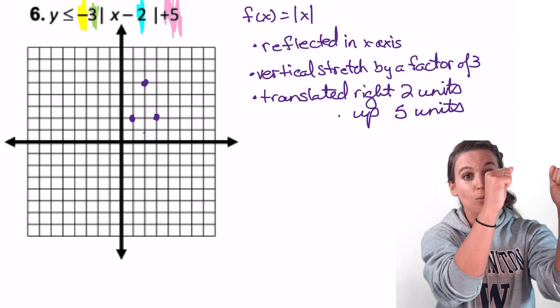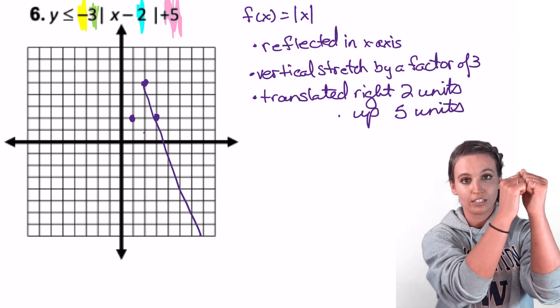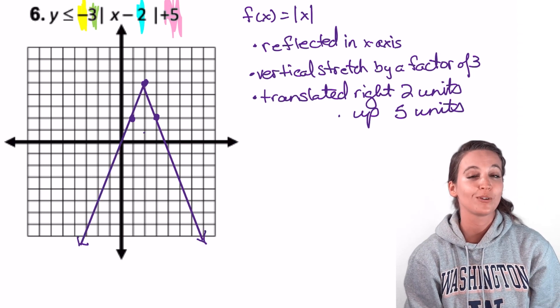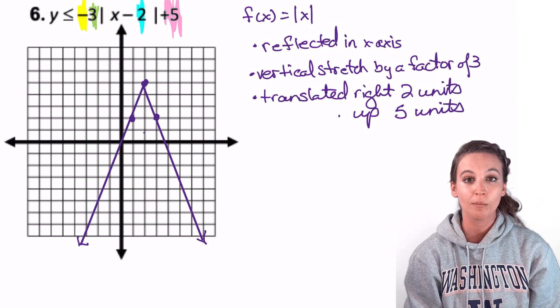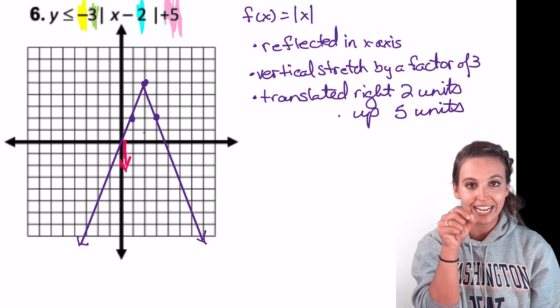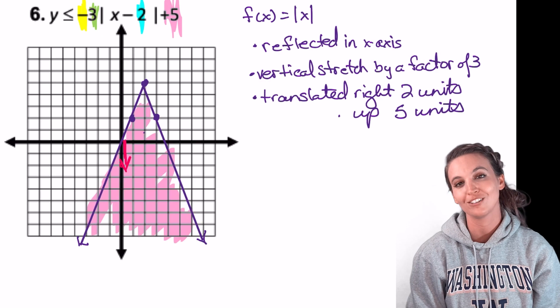So I'm going to go over 1, down 3, back to the vertex, over 2, down 6. We're going to have a solid graph because we're less than or equal to. So I'm going to go to my y-intercept and draw an arrow going less than, so down. That's the part I'm going to shade.